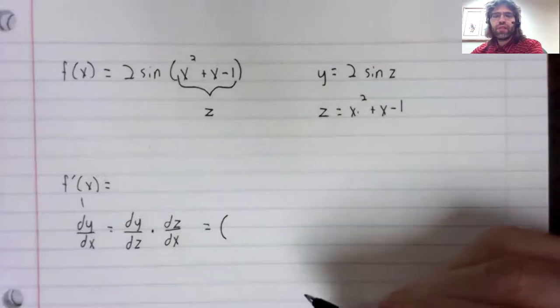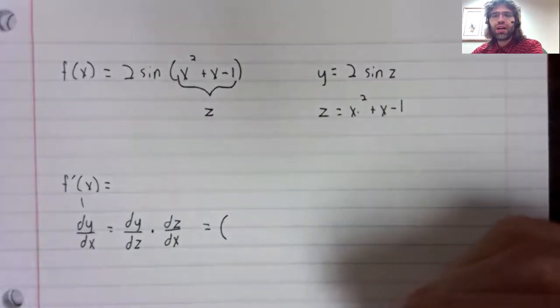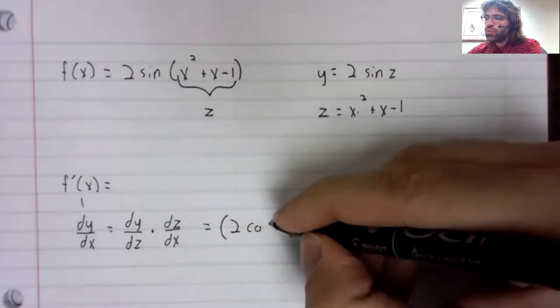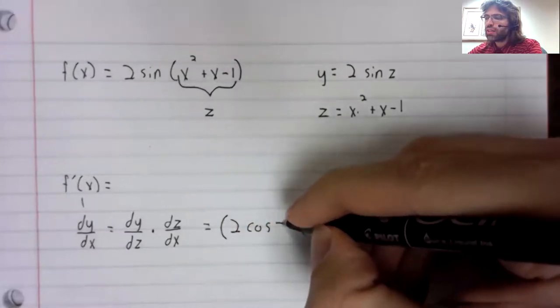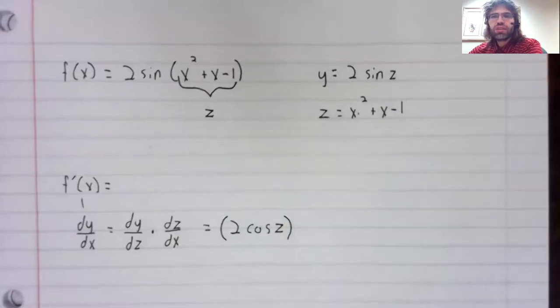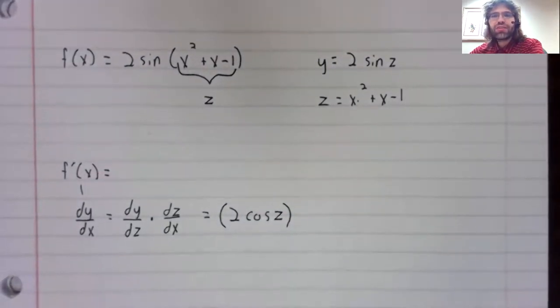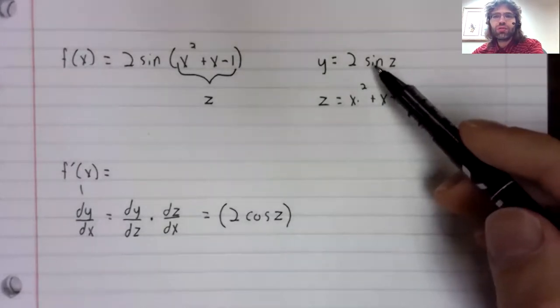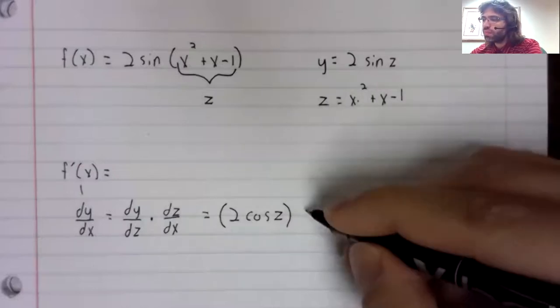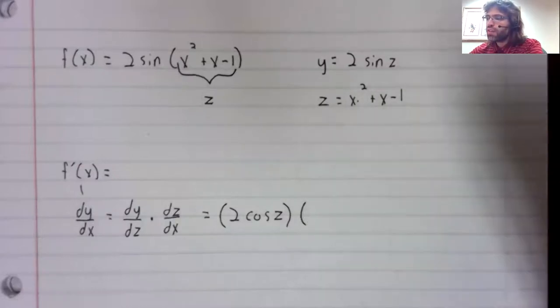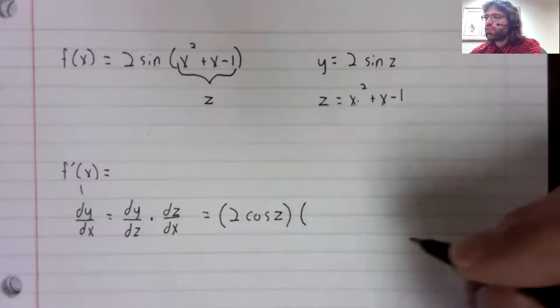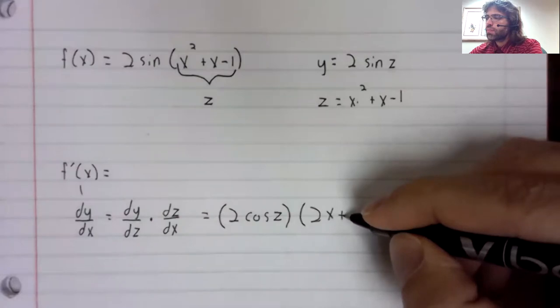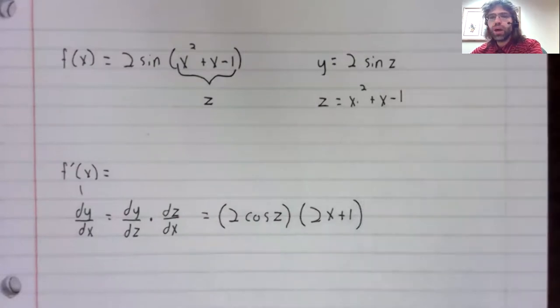The derivative of two sine z is two cosine of z. I wasn't kidding in the last section when I said you needed to master these derivatives fast. The derivative of x squared plus x minus one is 2x plus one.